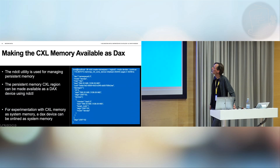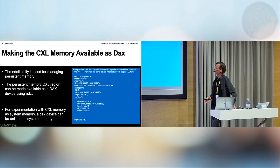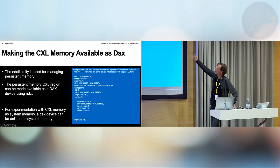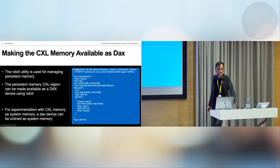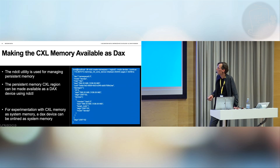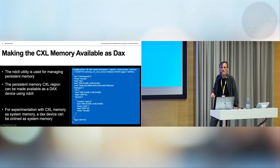You can even execute from it if you're doing binary translation. If you want to expose the persistent memory as a direct access device, you can also do that using the NVDIMM control utility — you can create namespaces on the region to get a DAX device. And if you want to play around with having CXL memory as system memory in QEMU, you can online it as system memory as well.